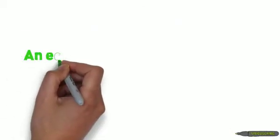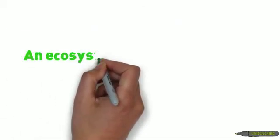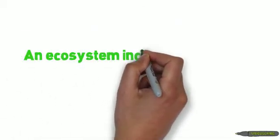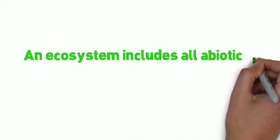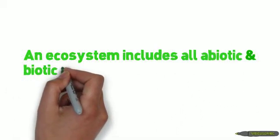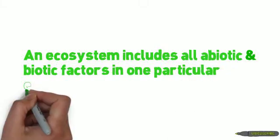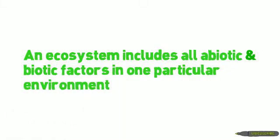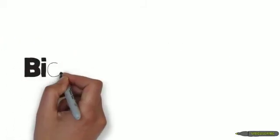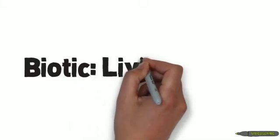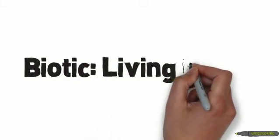To start, let's talk about what an ecosystem is. An ecosystem includes all abiotic and biotic factors in one particular environment. There are two new vocabulary words within that definition, so let's break them down. When you see the prefix 'bio' in the word biology, or biotic, it means life.